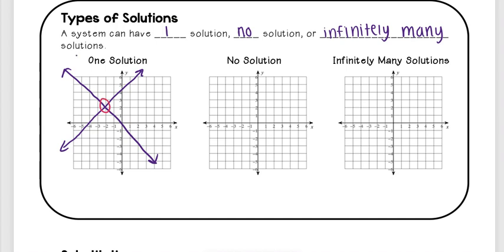Another one that we can have is no solution. So what that looks like is basically lines that never intersect. And as we learned last time, those are parallel lines. So any times we see a system of equations where they have the same slope, we can immediately tell that's going to be a no solution because that means they're parallel.